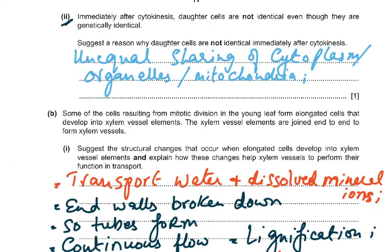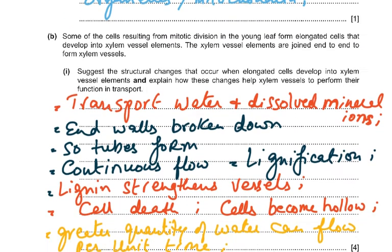The next question asks: why are daughter cells not identical immediately after cytokinesis, even though they are genetically identical? The chromosome content is the same, but something else is not exactly the same. The reason is unequal sharing of cytoplasm — maybe one cell has 10 mitochondria and the other has 9, or one has 100 ribosomes and the other has 120. Cytoplasm division is slightly random, so one cell may receive a few more organelles than the other.